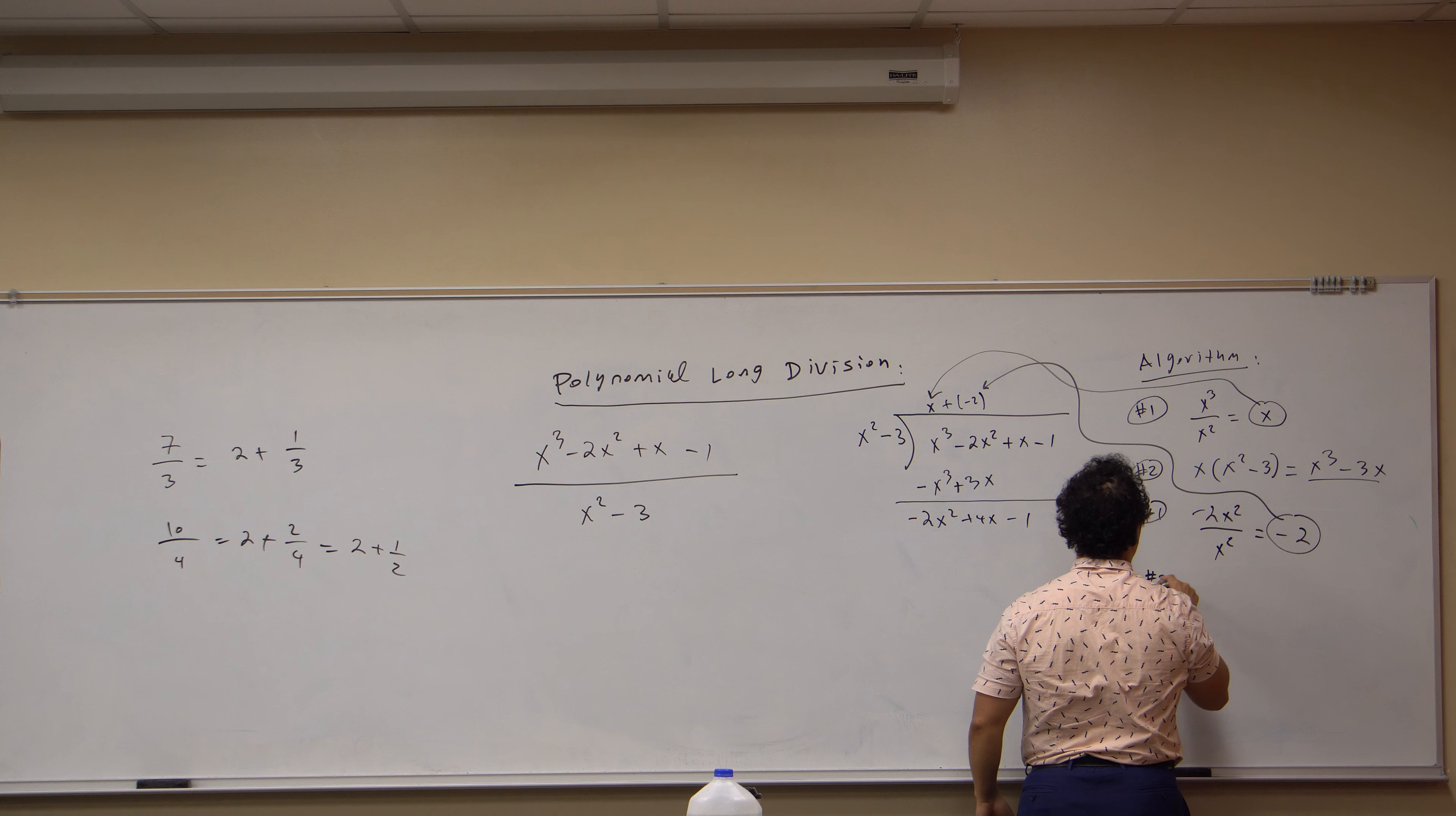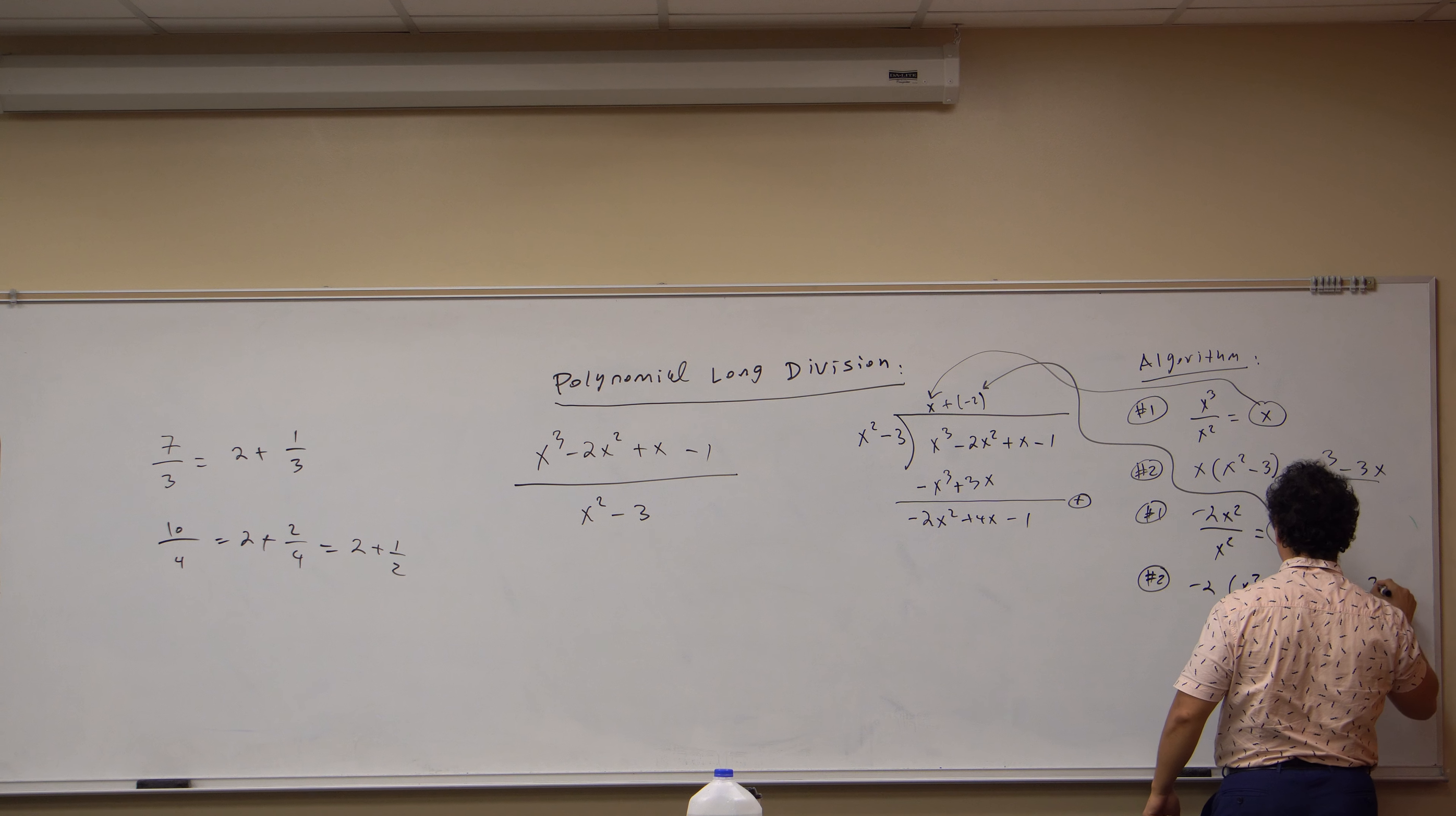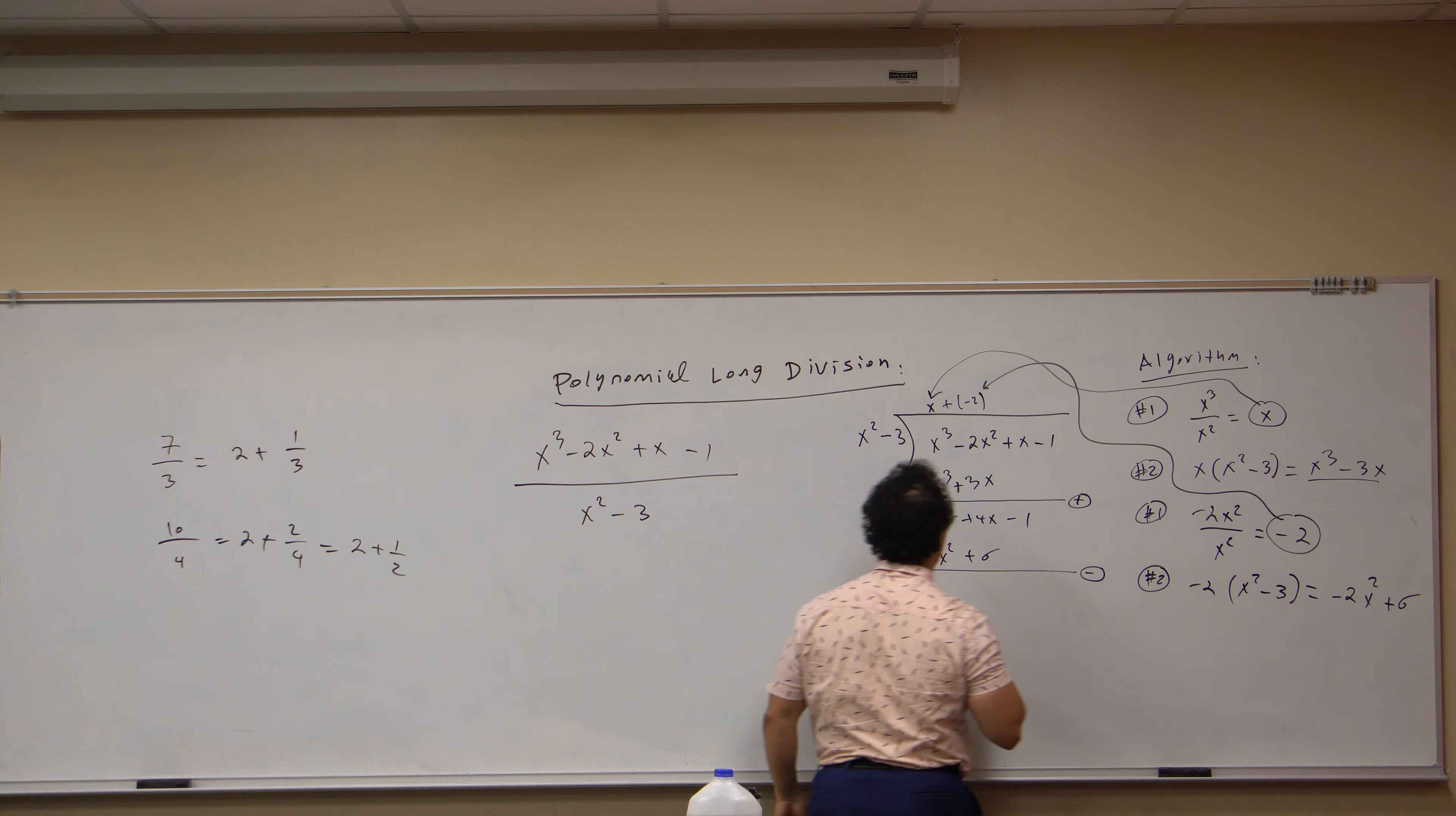Then step two, get that negative two, and multiply it by what's out here. That gives me negative two x squared plus a six. So I bring that here, negative two x squared plus a six, create my subtraction bar, distribute a negative to make it an addition bar.